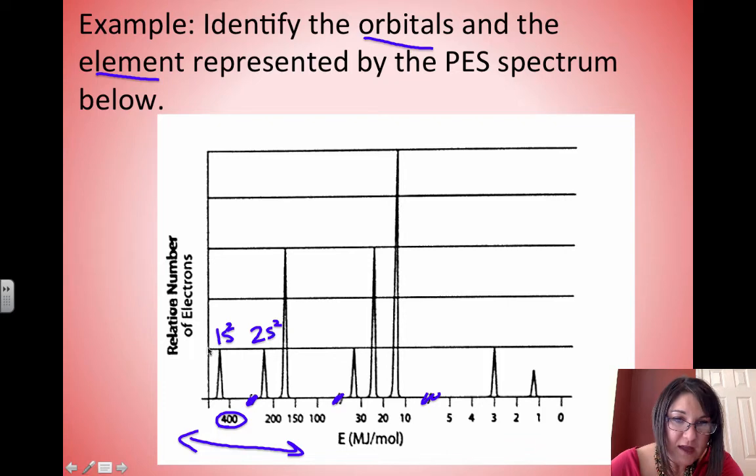2s holds 2 electrons, and if this line is 2, then we have here 4 and 6, then 8, and then 10. Our next peak is at the 6. That makes sense, because the 2p can hold 6 electrons.